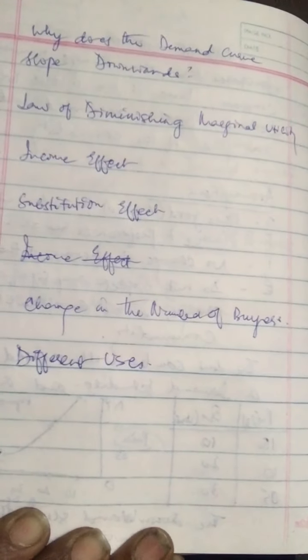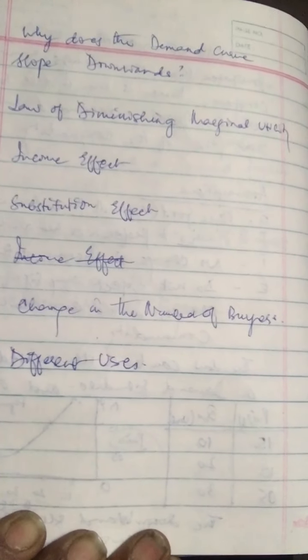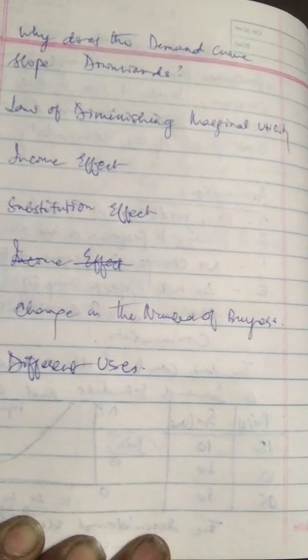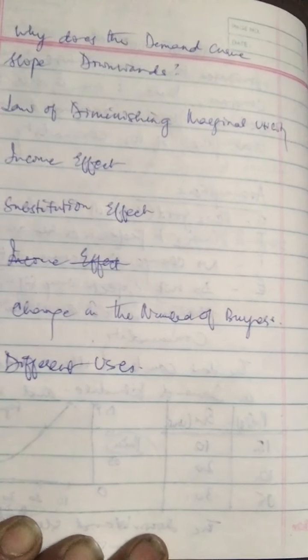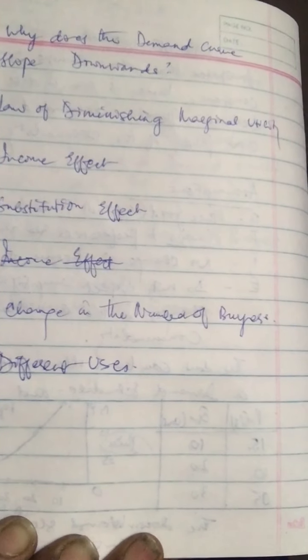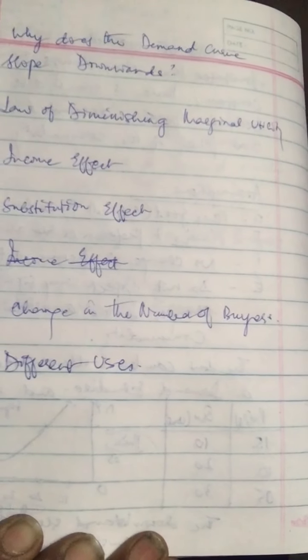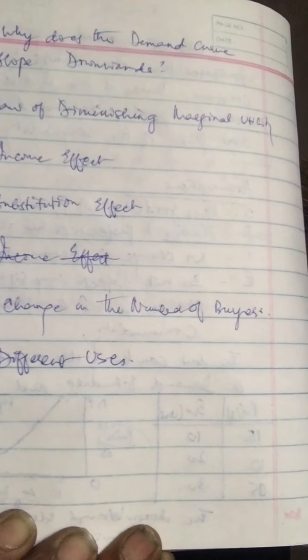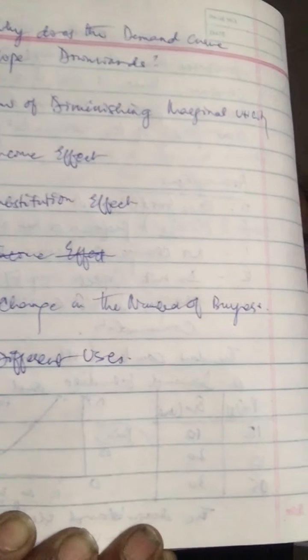We can also talk about the income effect. The income effect refers to the effect on quantity demanded when the real income of the buyer changes owing to a change in the price of the commodity. For example, with a fall in price, real income increases, and accordingly demand for the commodity expands.